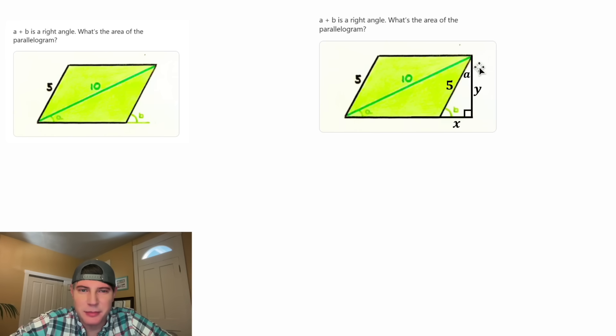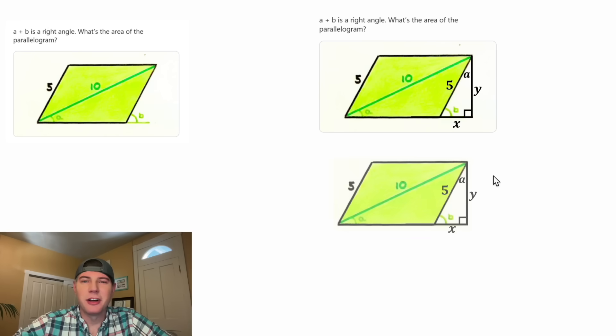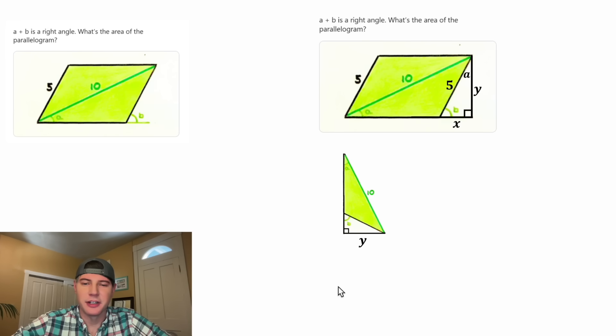And now we have two similar triangles. It'll be easier to see if we line them up next to each other. Let's copy all this down here, focus on this triangle, and rotate it over here. And then we can copy down this triangle. We can show that these two triangles are similar.